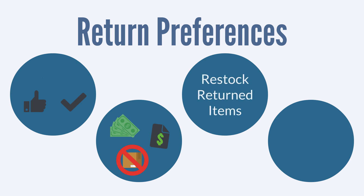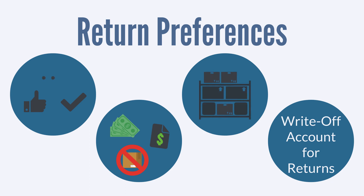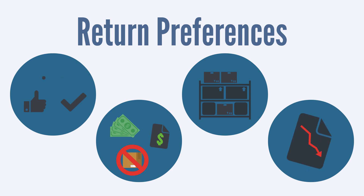The last two customer return preferences are Restock Returned Items and Write-Off Account for Returns. These two preferences determine what happens to the returned items once they get back to you. If you want the items restocked into inventory when they arrive, you would enable Restock Returned Items. But if the items should not be restocked for resale, you would need to write them off at a loss — under Write-Off Account for Returns, you would choose the account where the items are written off.